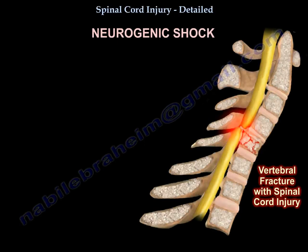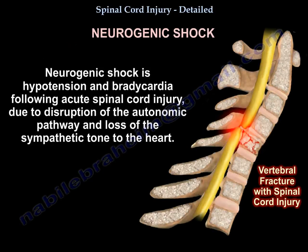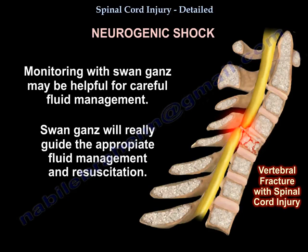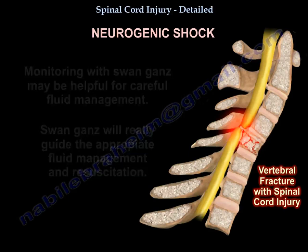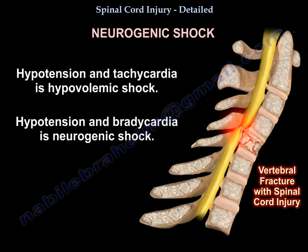Neurogenic shock is hypotension and bradycardia following acute spinal cord injury due to disruption of the autonomic pathway and loss of sympathetic tone to the heart. There will be widespread vasodilation with decreased systemic vascular resistance due to injury to the descending sympathetic system. Monitoring with a Swan-Ganz catheter may be helpful for careful fluid management. You may give vasopressors to treat the hypotension. Remember: hypotension and tachycardia is hypovolemic shock; hypotension and bradycardia is neurogenic shock.